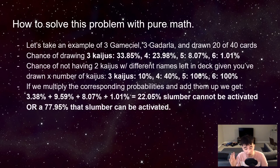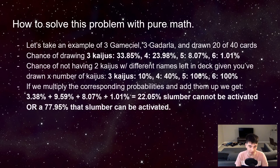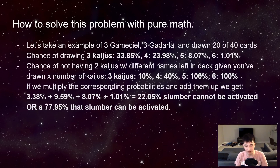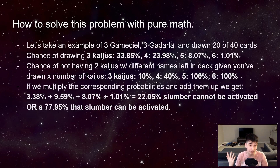If we add all the probabilities up and multiply: 33.85% of the time we draw three Kaijus, and 10% of those we can't activate Slumber. For the ~24% of the time we draw four Kaijus, 40% of those cases end in not being able to activate Slumber. Five and six is 100%. We get a 22.05% chance that Slumber cannot be activated, or a 77.95% chance that it can be activated.